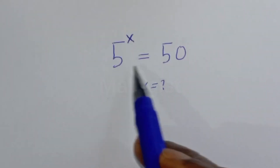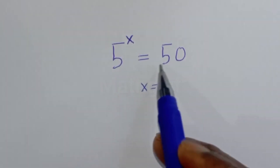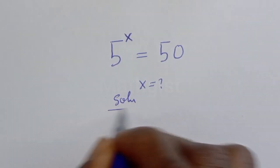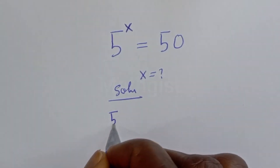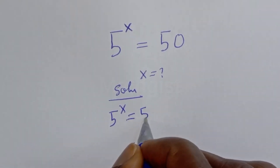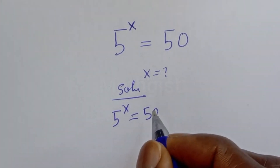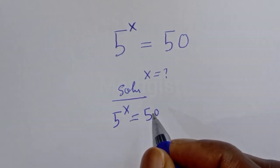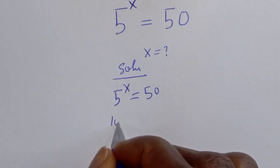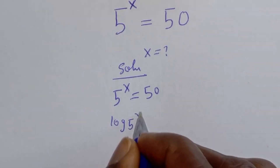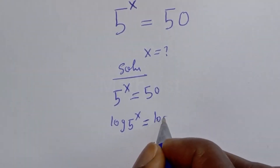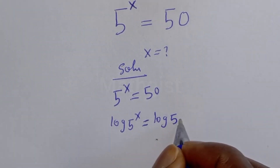Hello. To solve for s from this given problem: 5 raised to power s is equal to 50. Taking the log of both sides, we have log of 5 raised to power s is equal to log 50.